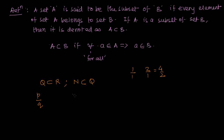Is the natural number a subset of integers? Yes. Integers are …−3, −2, −1, 0, 1, 2, 3… so natural numbers are indeed a subset. Is whole number a subset of natural numbers? No, because whole numbers include 0, which natural numbers do not have.